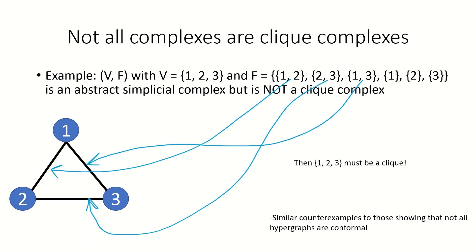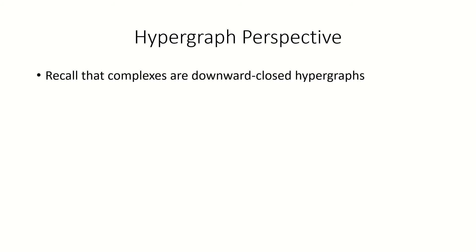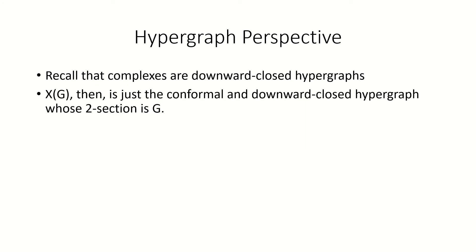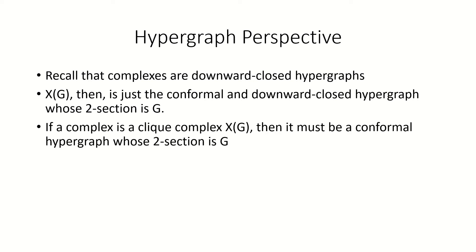This might remind you of the counterexamples that show that not all hypergraphs are conformal hypergraphs. This leads us to our next point. If we consider abstract simplicial complexes to be hypergraphs whose edges are closed under taking subsets, then the clique complex of a graph is just a conformal hypergraph whose two-section is that graph — specifically, the conformal hypergraph whose two-section is our graph and whose edges are closed under taking subsets. In other words, if a complex is a clique complex, it must be the clique complex of its two-section, which means that it must be a conformal hypergraph.